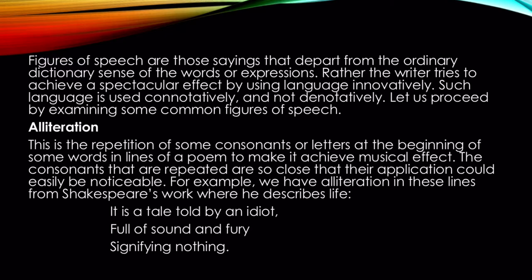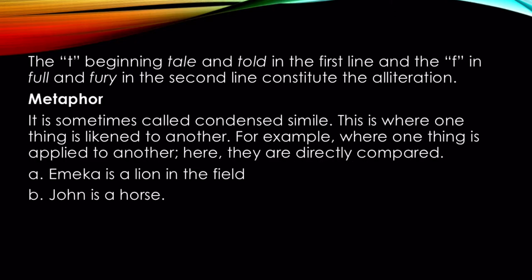First, alliteration. Alliteration is a repetition of consonants or letters at the beginning of words — such as in poems — to achieve some musical effect. For example, we have alliteration in these lines from Shakespeare's work where he describes life: 'It is a tale told by an idiot, full of sound and fury, signifying nothing.' The T in 'tale' and 'told' in the first line, and the F in 'full' and 'fury' in the second line, constitute the alliteration.